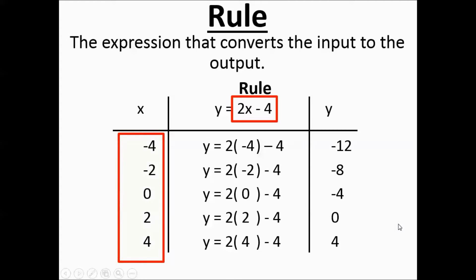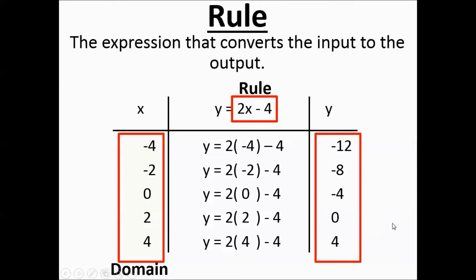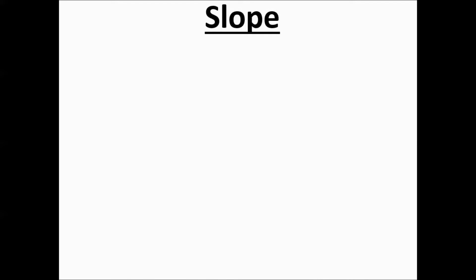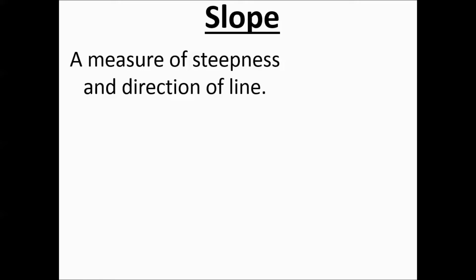All of those inputs are the domain; all of those outputs are the range. Next we're going to talk about slopes — the steepness and direction of a line. There are four kinds of slopes. Think of slope as rise over run: how far up you go divided by how far over you go.